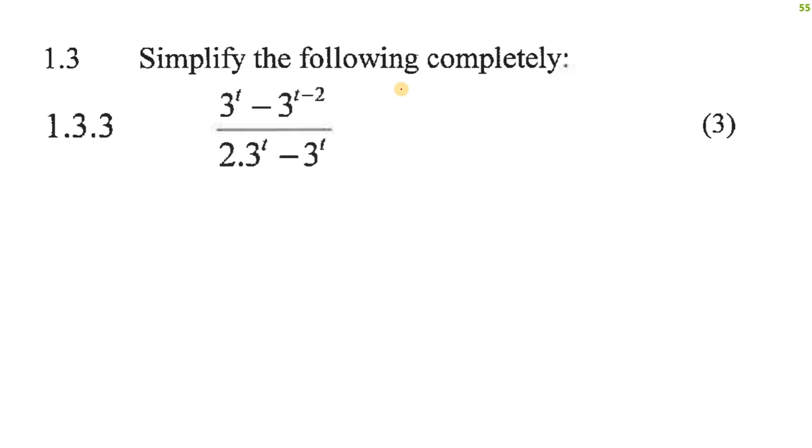This question says simplify. So what we can see here is that this part here is almost the same as, you can see that there's another 3t over there. So what we'll do first is we'll have to break this up. So you'll break that up into 3 to the t and 3 to the minus 2. Make sure you understand that.